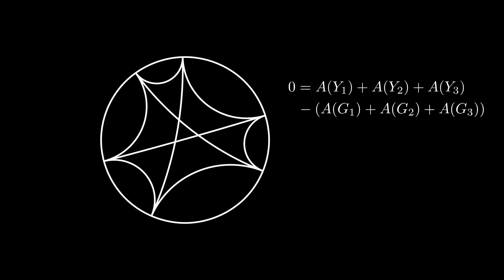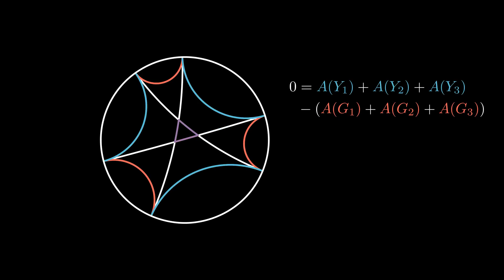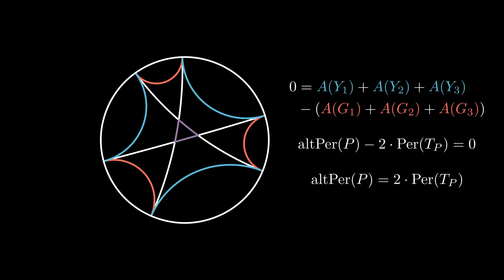But what does this sum actually represent? Looking at the sum in the picture, if we subtract the alternating perimeter of the gi, that part of the sum cancels out with the alternating perimeter of the yi. We notice that we obtain twice the perimeter of the inner triangle as well as the alternating perimeter of the hexagon. Overall, our equality follows.